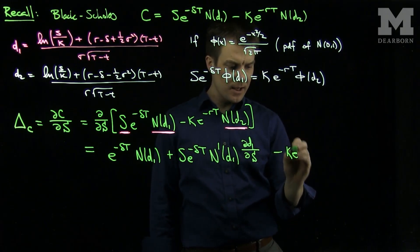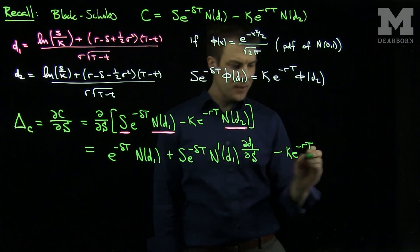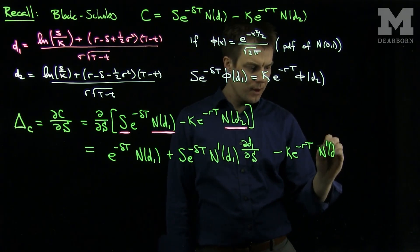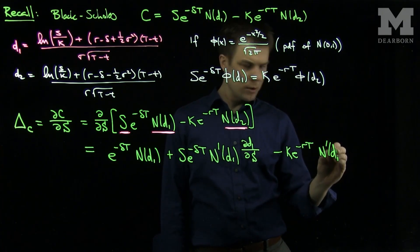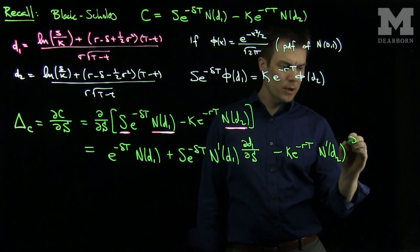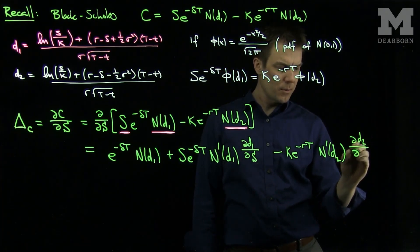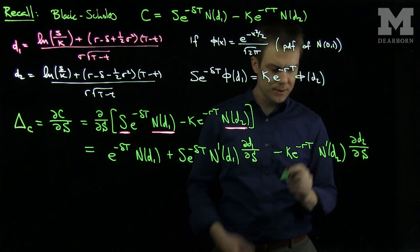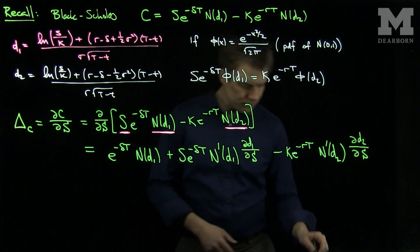And I'll do this term over here. I'll have a minus k e to the minus rt, and then an n prime of d2, and then I'm going to have a partial d2 partial s.